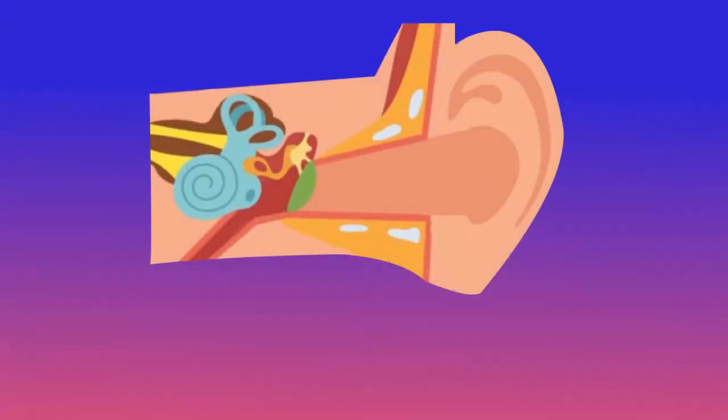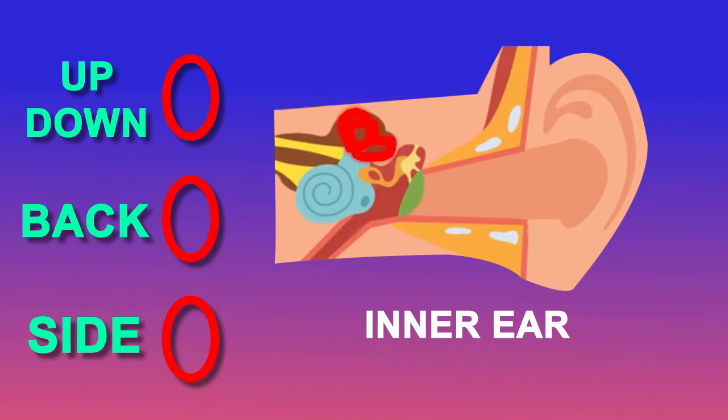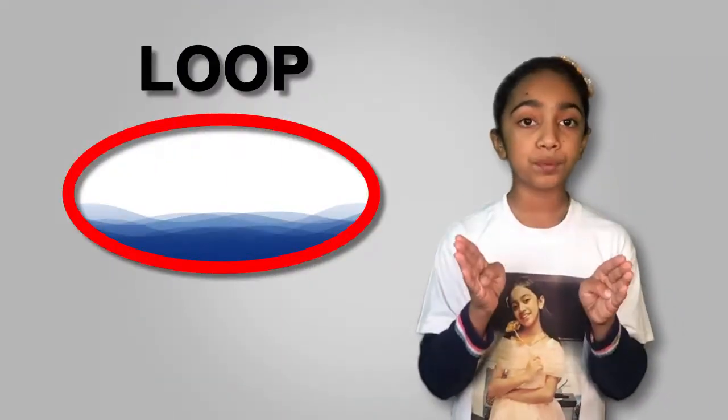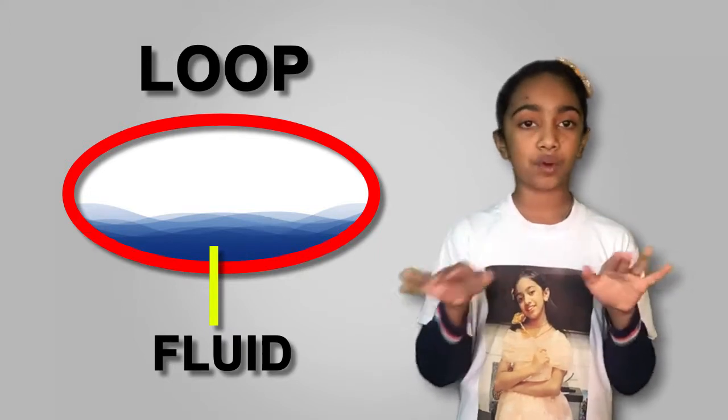When you look deep inside your ears, you find a part that's known as the inner ear. In there, there are three loops, one facing up and down, the second one facing to your back and the third one facing sideways. In each of these loops is some fluid, something like water.